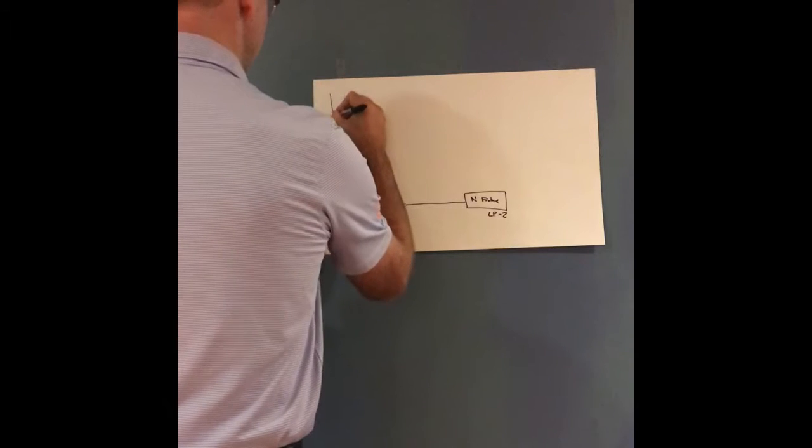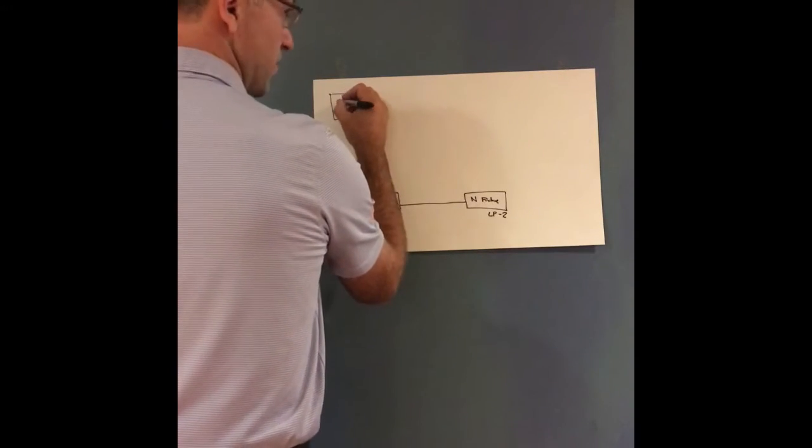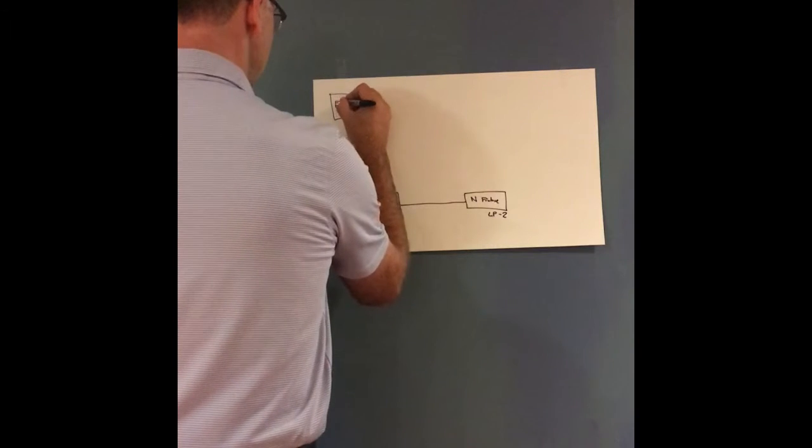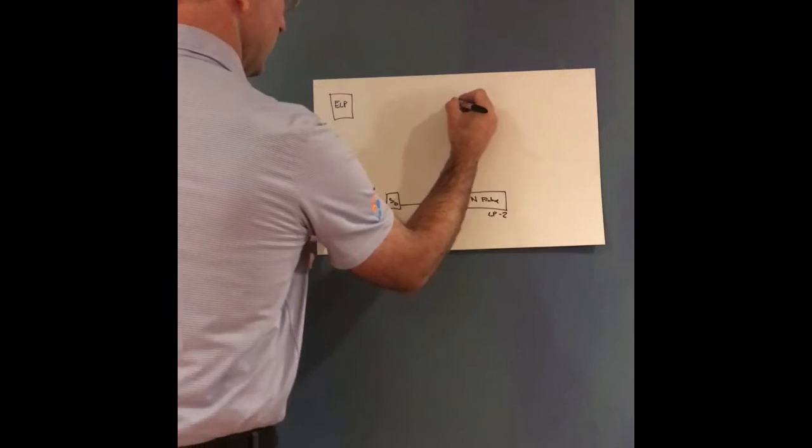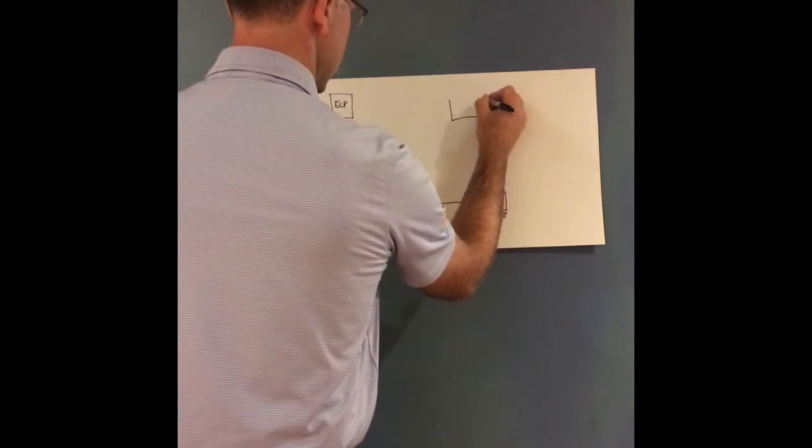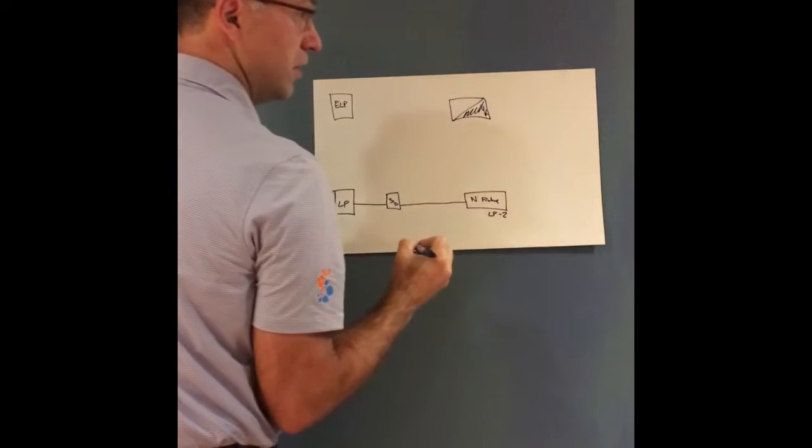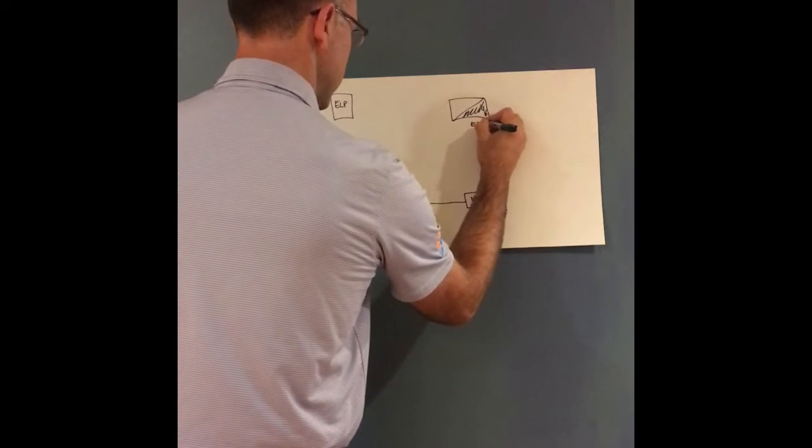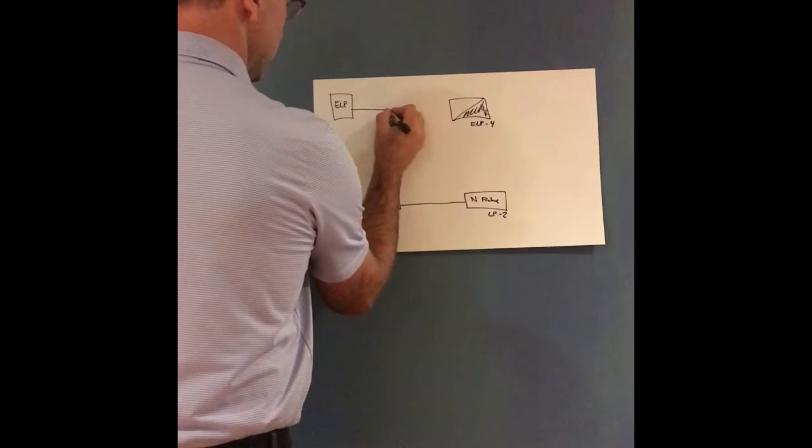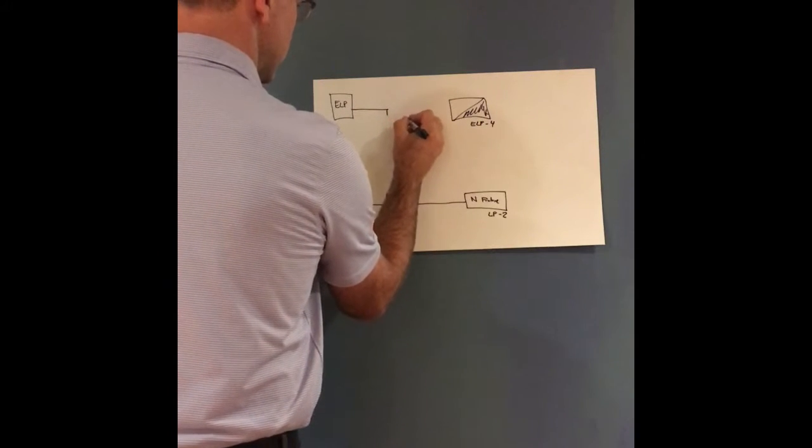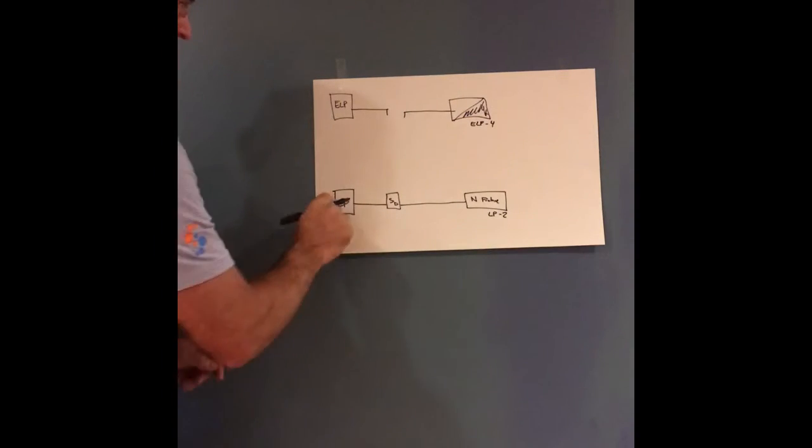Up here, we're going to go with our normal slash emergency panel, which we're going to call ELP, and we have our emergency fixture, normal slash emergency fixture over here, and we're going to power that from circuit ELP-4, and then we have our power, and I'm going to drop just like this, because it's going to make a brief stopover in this device. So that's simple.